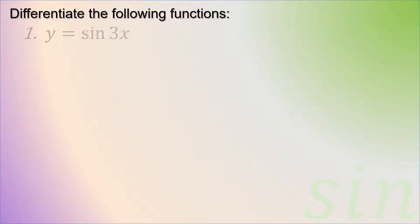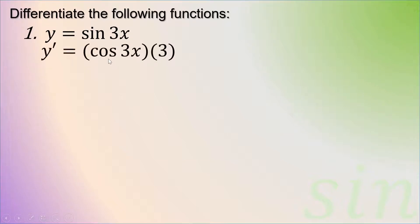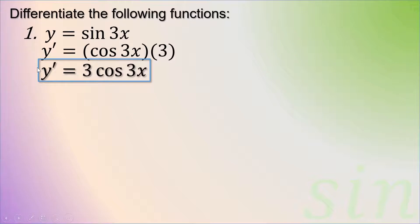For example, y is equal to the sine of 3x. We have to differentiate this function. The differential of sine is cosine, so that is cosine 3x. Then we derive u which is 3x, giving us 3. Simplifying, that is 3 cosine of 3x. That is our first derivative of y.